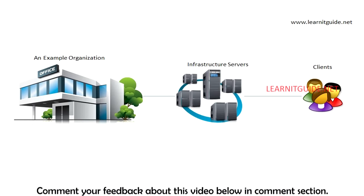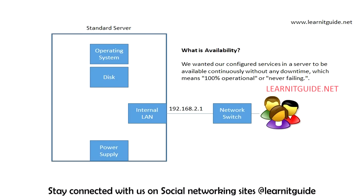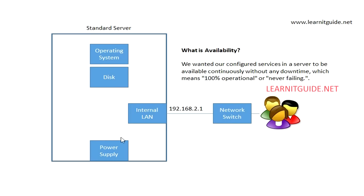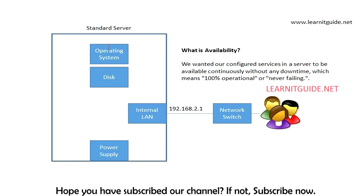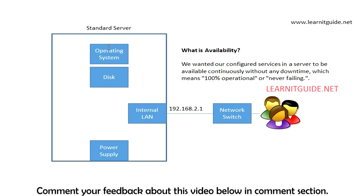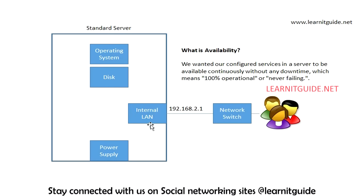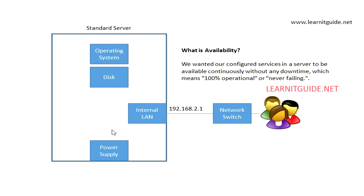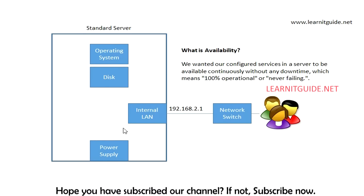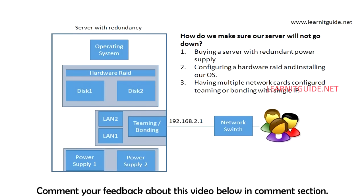Assume that this is a single standard server which has a single power supply and LAN. On top of the operating system you will be configuring some services. Your clients will access the services via your IP address through the network. It is not having any redundancy — any failure to any of these hardwares will lead to downtime, so clients will not be able to access your server.